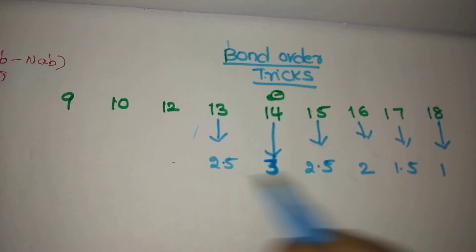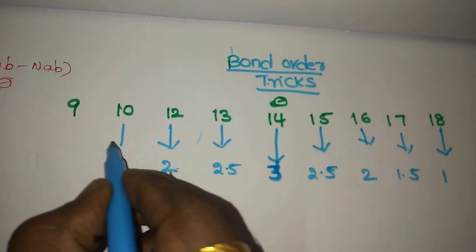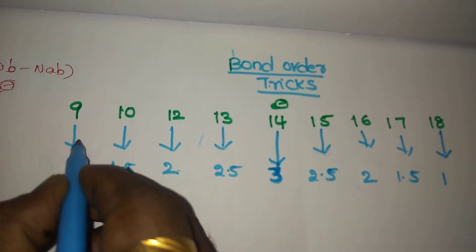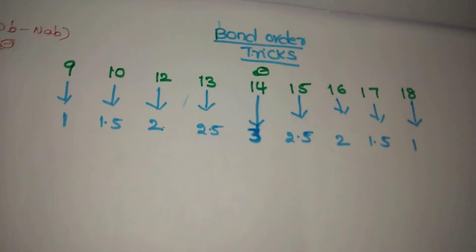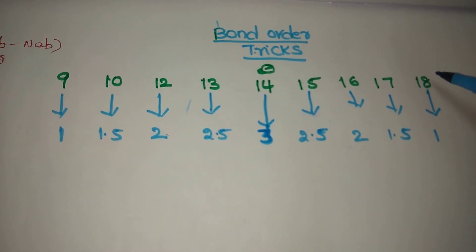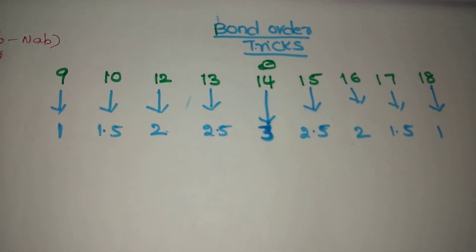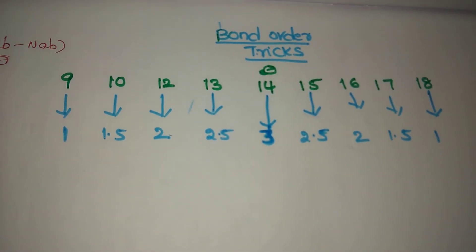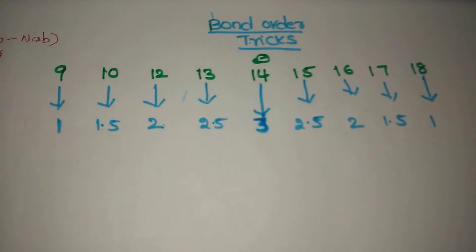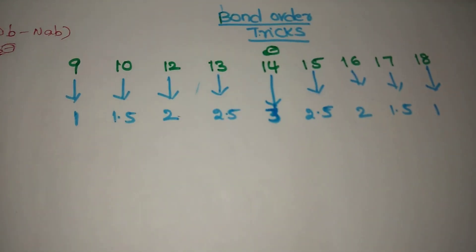Continuing: 16 electrons gives bond order 2, 17 gives 1.5, 18 gives 1. For 19 and 20, bond order is 0. For 13, bond order is 3; subtract 0.5 going left: 12 gives 2.5, 11 gives 2, 10 gives 1.5, 9 gives 1. The green numbers are electron counts; blue numbers are bond orders. This is one quick method.